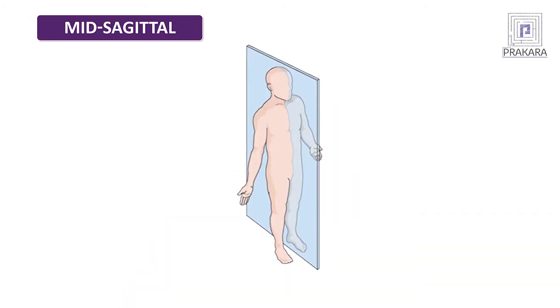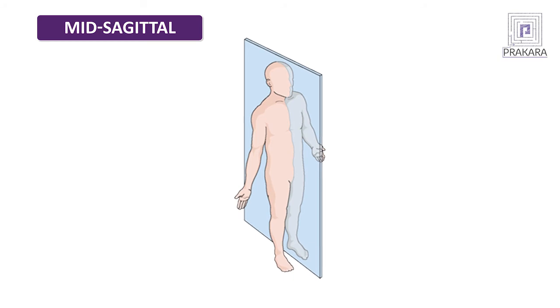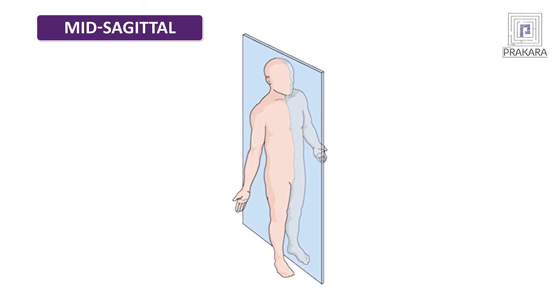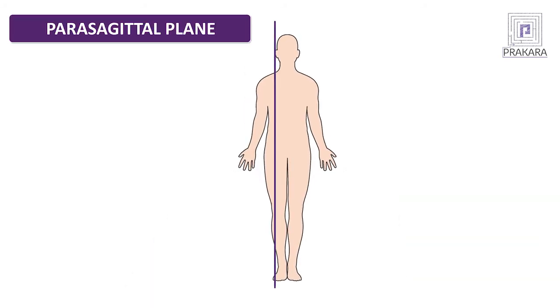Now that we are done talking about directional terms, we are going to talk about anatomical planes. Various parts of the body are studied relative to planes, which are imaginary flat surfaces passing through different parts of the body. The first is the sagittal plane — a vertical plane which passes from anterior to posterior, front to back. The mid-sagittal or median plane passes exactly through the center of the body, dividing it into left and right equal halves. A parasagittal plane does not cross through the midline and divides the body into unequal right and left parts.